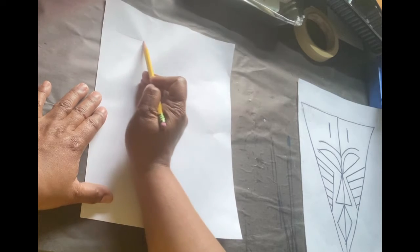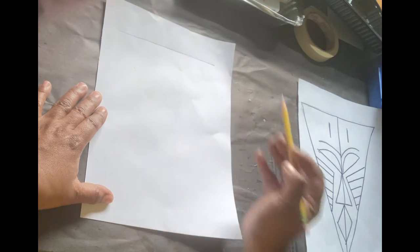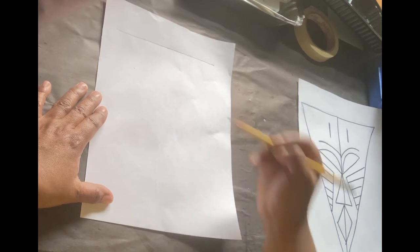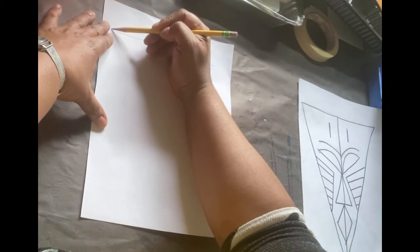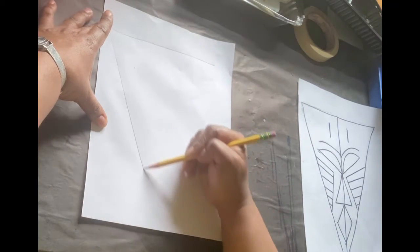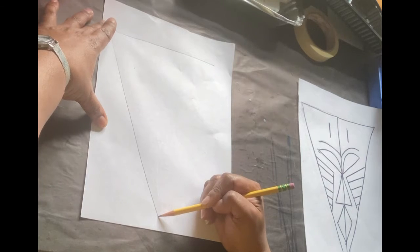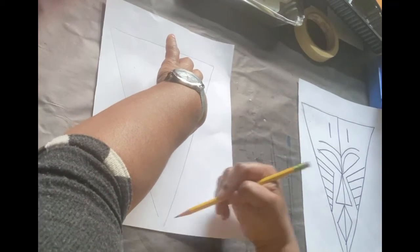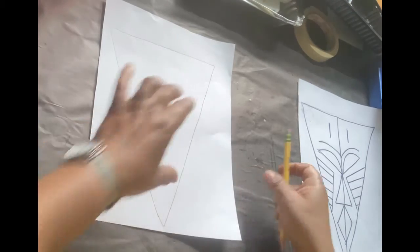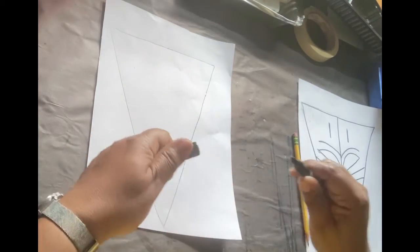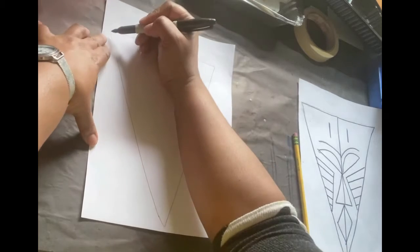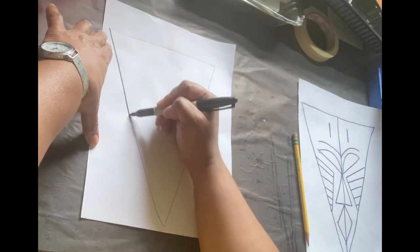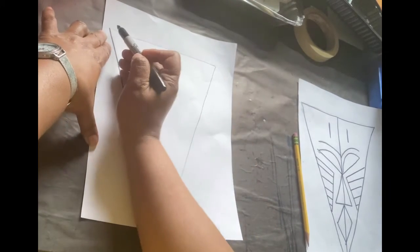Step one, draw your horizontal line across. Step two, diagonal line. Step three, diagonal line. So now you just created your triangle for your mask.